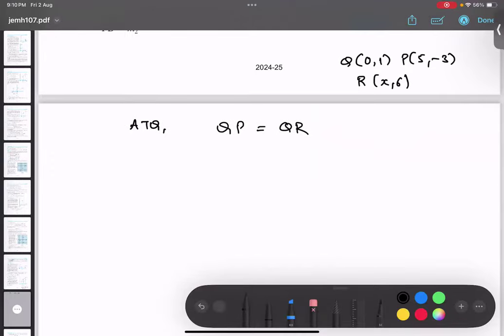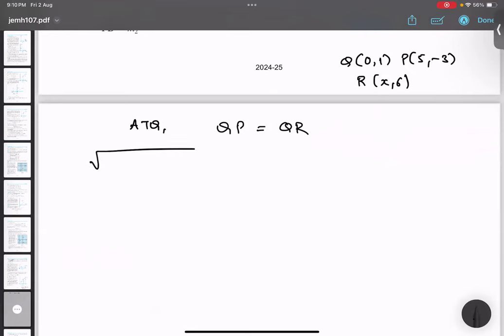So I'll find out the distance between QP. So I'll put square root of this, Q and P. So I'll put 5 minus 0 whole square plus minus 3 minus 1 whole square. And QR, X minus 0 whole square plus 6 minus 1 whole square. Is this thing clear? Any doubt? Yes. Distance formula.